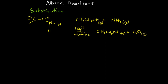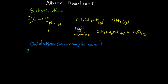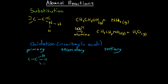Another important type of reaction that alkanols can undergo is an oxidation reaction. Alkanols can be oxidized to produce carboxylic acids, but only specific types of alkanols can do this. There are three types of alkanols: primary alkanols, secondary alkanols, and tertiary alkanols. These names refer to the number of carbon atoms that the carbon bearing the hydroxyl group is bonded to.